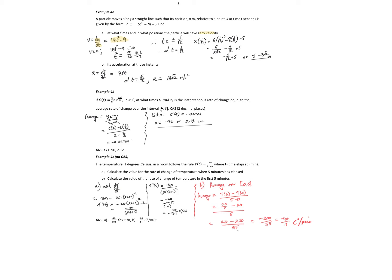The acceleration at those instances, well, if I want to find acceleration, that's the rate that the velocity changes, dv dt, which is my next derivative. So the derivative of the velocity rule is 36t. And at t equal to root 2 on 2, my velocity is going to be 18 root 2 meters per second squared.